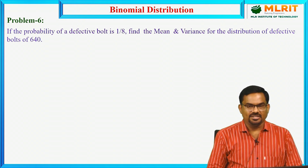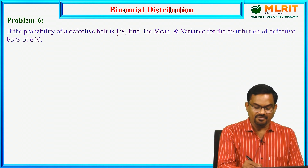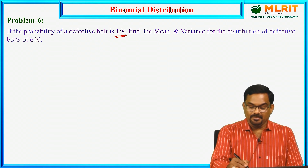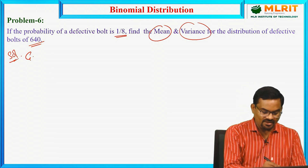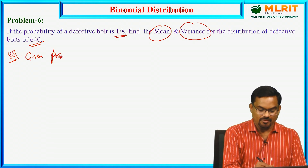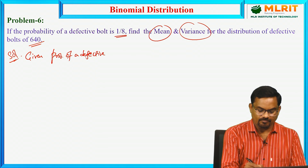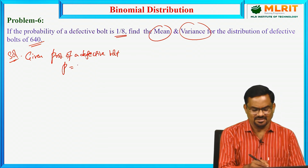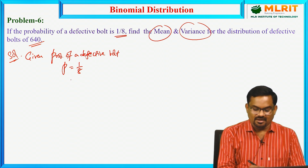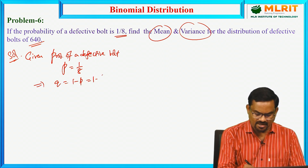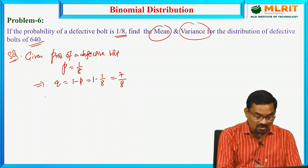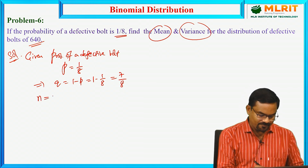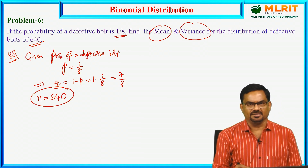If the probability of a defective bolt is 1/8, find the mean and variance for the distribution of defective bolts of 640. So here, given the probability of a defective bolt — let us consider this as small p equal to 1/8. That implies q will be 1 minus p, so 1 minus 1/8, which is 7/8. And we have 640 bolts, out of which we need to calculate the mean and variance.